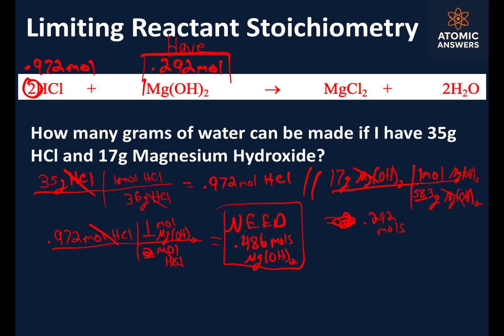Think about it: if your bill is 48 cents (0.486) but you only have 29 cents (0.292) in your pocket, you can't pay the bill. We need 0.486 moles but we only have 0.292 moles — magnesium hydroxide is your limiting reactant, which makes hydrochloric acid automatically the one in excess. You can only make as much product as you have of the limiting reactant.